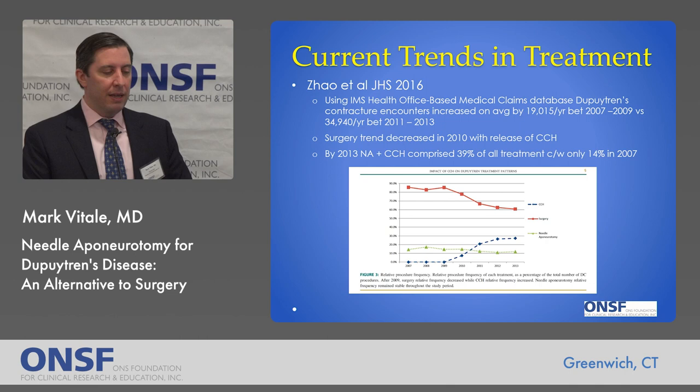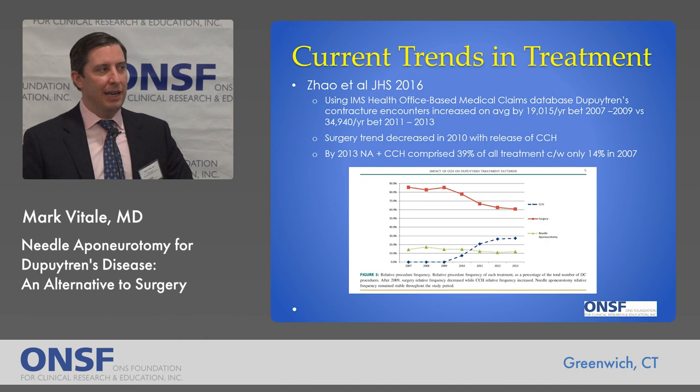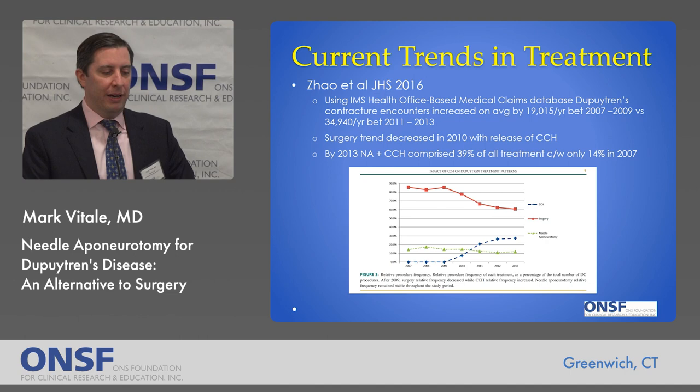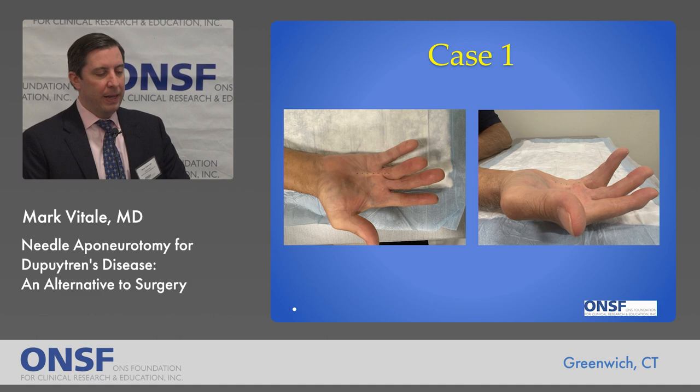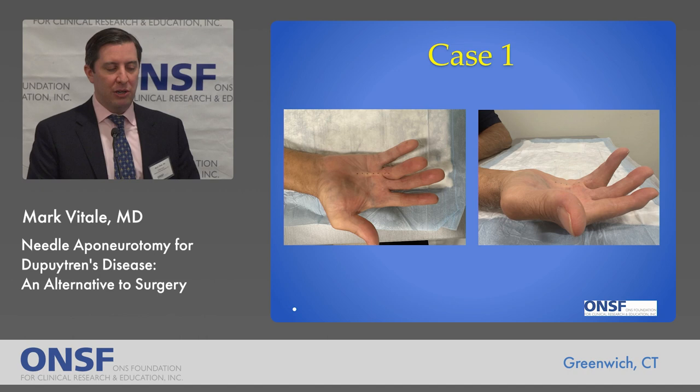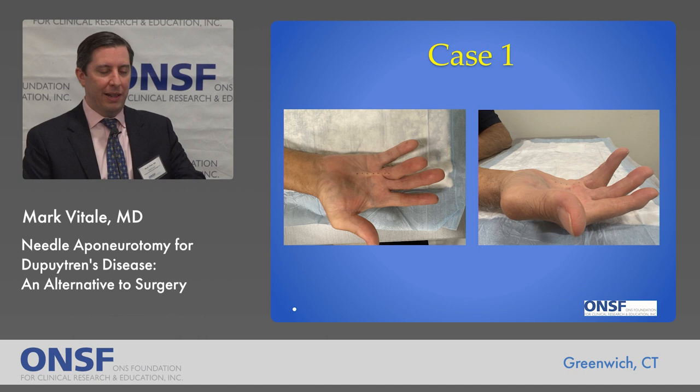Interestingly, since 2009 when the FDA approved collagenase, hand surgeons became more interested in non-operative treatments in general, including needle aponeurotomy. There's been a trend toward a decrease in the amount of surgeries and an increase in both collagenase and needle aponeurotomy treatments. Here's a patient I recently saw with an isolated 55-degree MCP joint contracture with a small PIP joint contracture. This is an ideal patient because he has a nice pre-tendinous central cord — not a cord on the ulnar or radial side of the digit where it would wrap around the digital nerves.